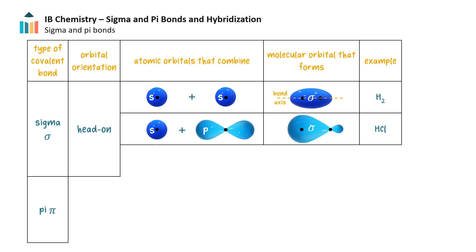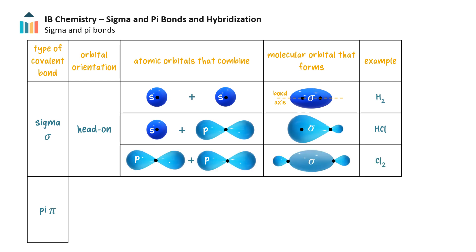Or it can occur between an s-orbital and a p-orbital, for example in hydrogen chloride. Or between two dumbbell-shaped p-orbitals, for example in the chlorine molecule. The electron density of the bond pair is located between the two nuclei in each of the sigma bonds.